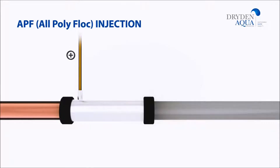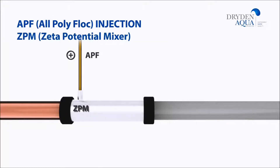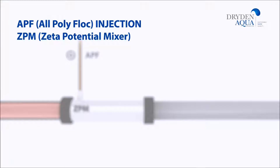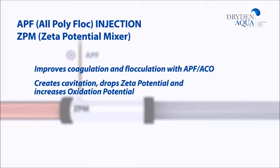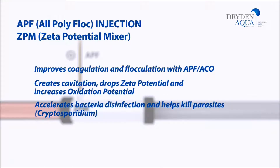APF is a strong coagulant and flocculant which should be injected in a zeta potential mixer. The ZPM not only mixes the water to improve the process of coagulation and flocculation, it also cavitates the water to drop the zeta potential and increase oxidation potential. This helps to remove bacteria and parasites by filtration. It ruptures cell walls, then kills them by oxidation.